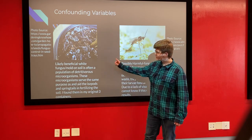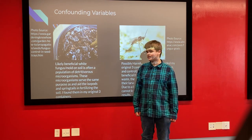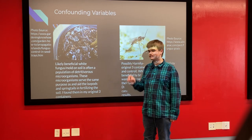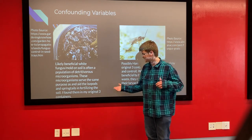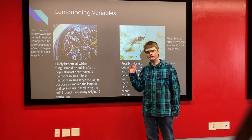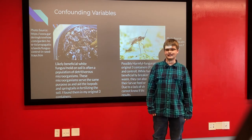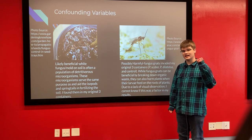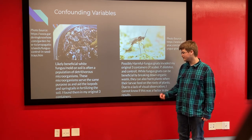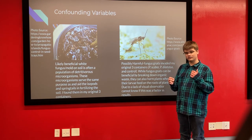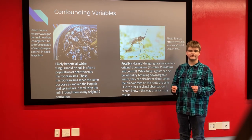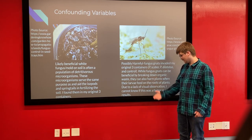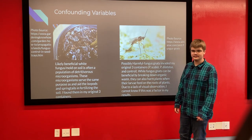I did have some confounding variables. The first was likely beneficial: a white fungus or mold on the soil that grew attached to little pieces of substrate. This appears to be a colony of detritivorous microorganisms serving the same purpose as the isopods and springtails in fertilizing the soil — it did not seem to impact the plants negatively. The second variable could be beneficial or harmful: fungus gnats, which invaded all three of my original containers and began invading the potting soil container as well. They can be beneficial in breaking down detritus, but their larvae can feed on plant roots, deprive the isopods or plants of food, or directly eat the plants, potentially messing with the results significantly.